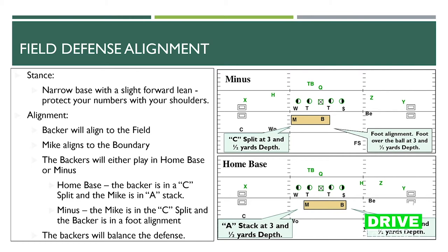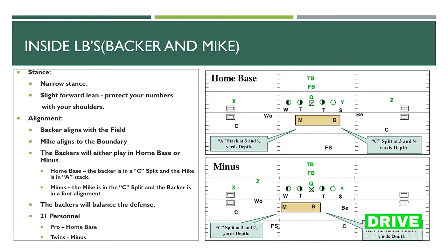From that good stance and narrow base, our linebackers have two alignments: minus or home base. Our backer will always align to the field and our mic will always align to the boundary. In home base, the backer is in a C split and the mic is in an A stack. In minus, the backer's inside foot is directly over the ball and the mic is in a C split. The backers balance the formation. Narrow stance, slight forward lean, protect your numbers.